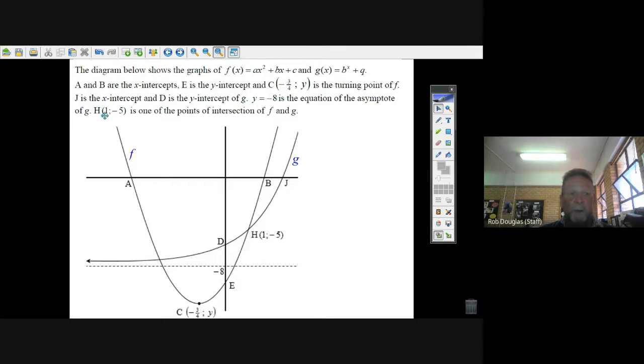You're given that 1 and minus 5 is a point that's part of the parabola and it also goes through the exponential equation. Okay, now that we know, it's good to read that thing really carefully, and then let's get started.